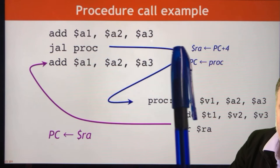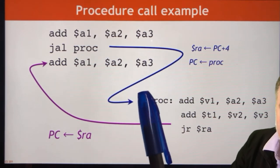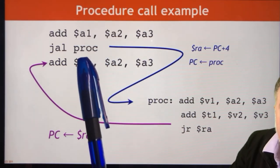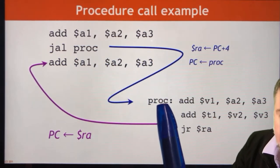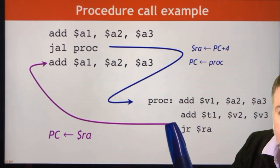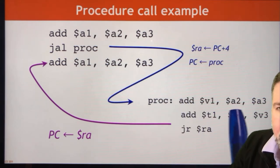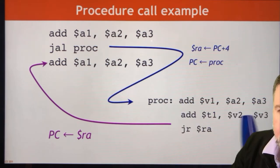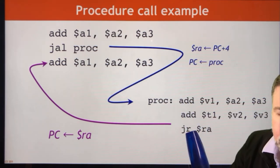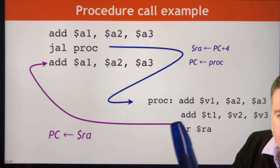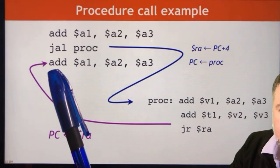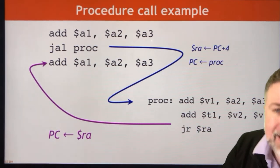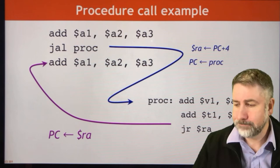So we're going to jump to a procedure — which is a label in your assembly code or in some other assembly code — do some stuff, and then when you're done you're going to do JR RA which will get you back to where you started. That's the basics of a procedure call.